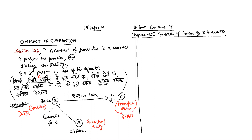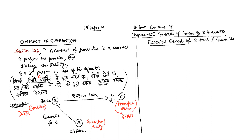In this contract of guarantee, A is the guarantor and B is the creditor. Now let's look at the essential elements — the important elements — of a contract of guarantee.